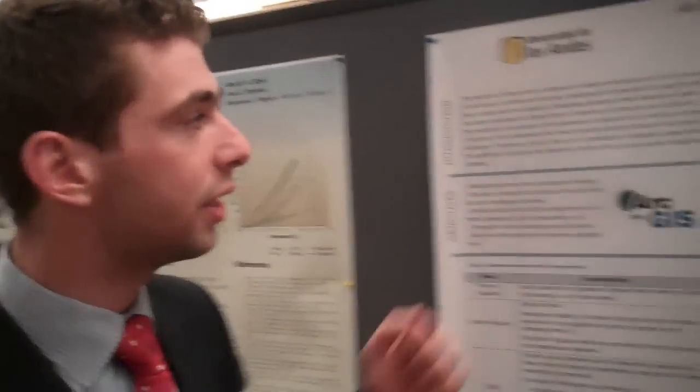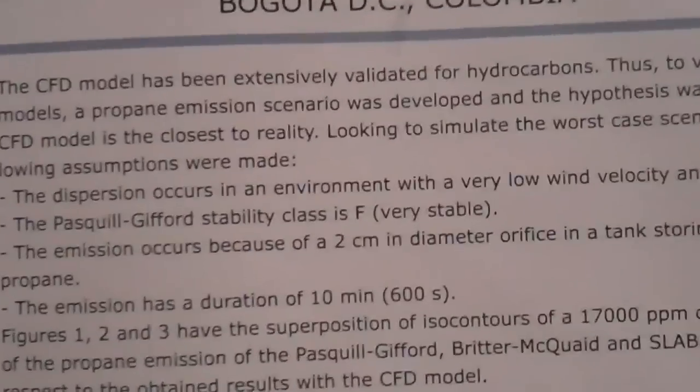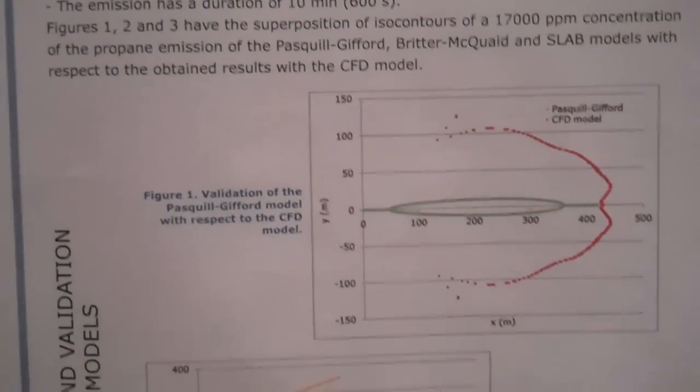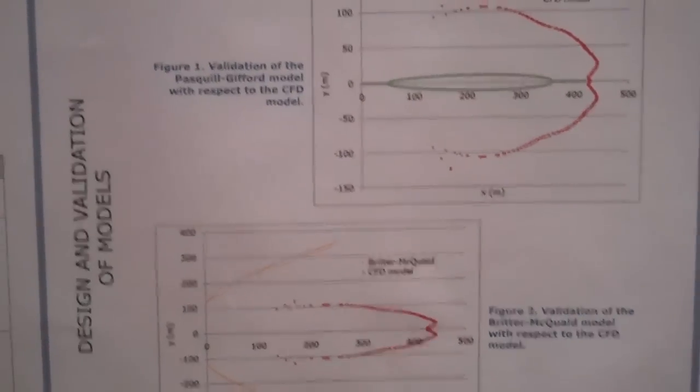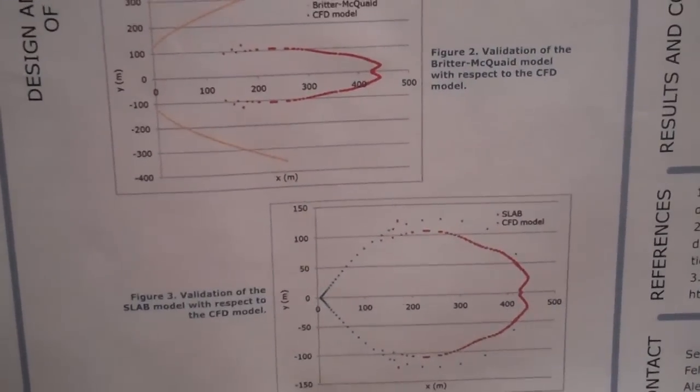How were we going to validate these models? We can't exactly go to a laboratory and spill chlorine and see how many people are affected. So we took a theoretical approach, validating with respect to another existing model. The CFD model available at the university — FLACS — has been extensively validated for hydrocarbons, especially methane and propane. Propane is a heavier-than-air gas, so we validated with a dispersion scenario involving a horizontal jet of propane at an emission height of 2.15 meters.